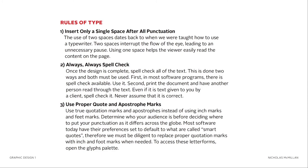Two: always spell check. Once the design is complete, spell check all of the text. This is done two ways and both must be used. First, in most software programs there is a spell check available — use it. Second, print the document and have another person read through the text. Even if the text is given to you by a client, spell check it. Never assume that it is correct.